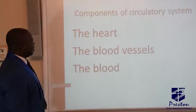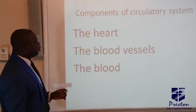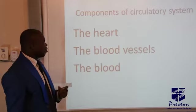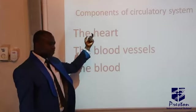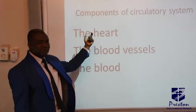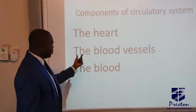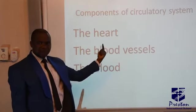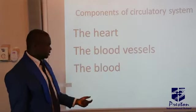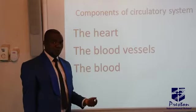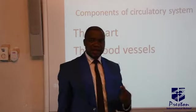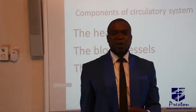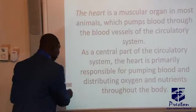The major components of the circulatory system — I need to mention that — number one, we have three major. Number one, we have the heart, which is the pumping organ, like a pumping machine in your house. We have the blood vessels, in which blood is transported. Then we have the blood itself, which is a liquid tissue that helps in transporting materials around our body system.